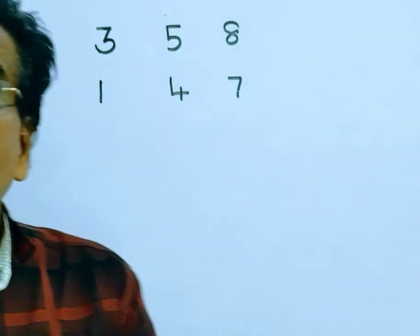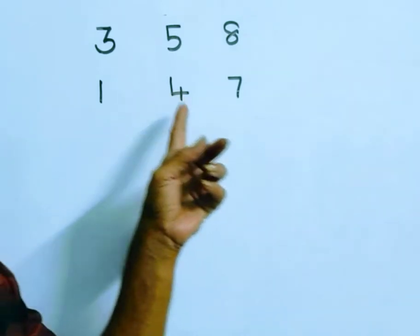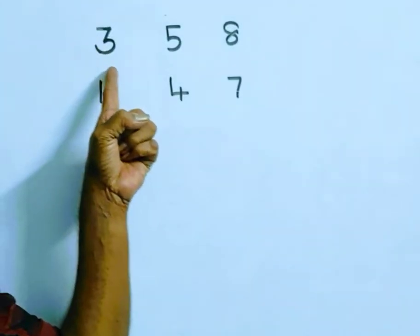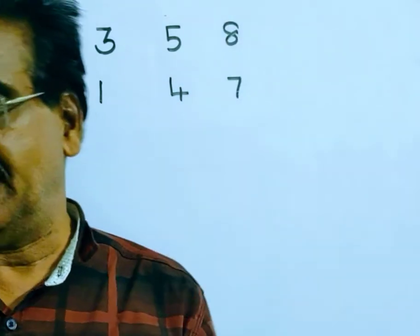A number leaves remainders 1, 4, 7 when successively divided by 3, 5, and 8 respectively.